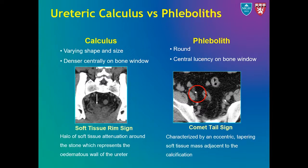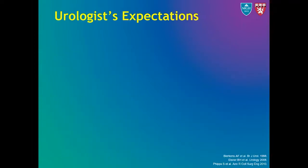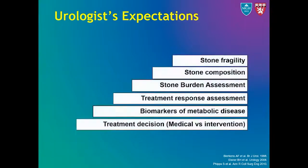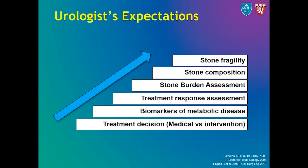After discussing the imaging appearances of stones on CT, let's look at the urologist's expectations. In the era of precision medicine, the urologist's expectations have risen beyond the mere detection of stone and its location. The urologist now demands more information from a CT, including details such as stone burden, stone composition, stone fragility, assessment of treatment response, and identification of markers of metabolic disease.